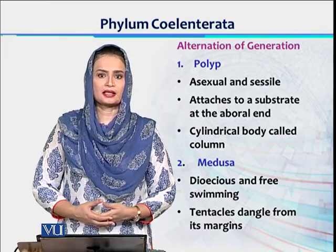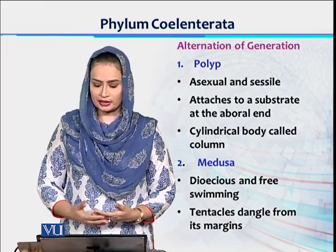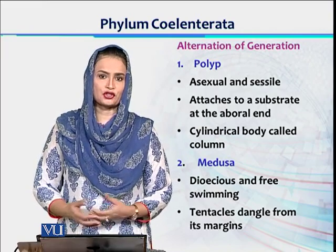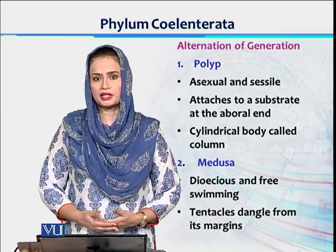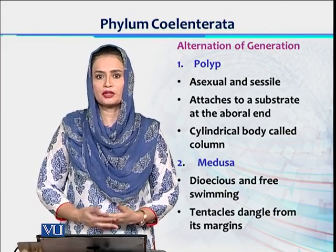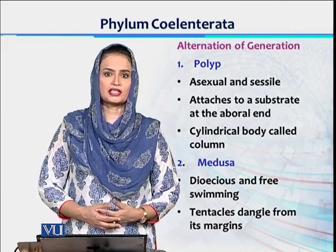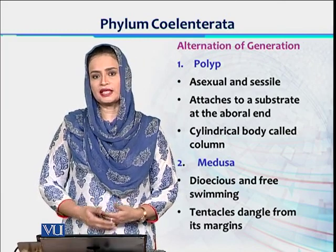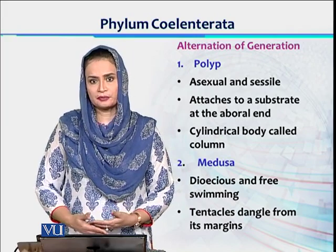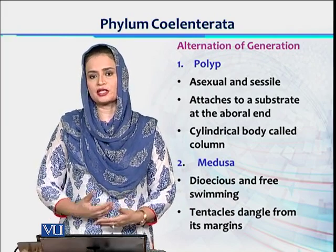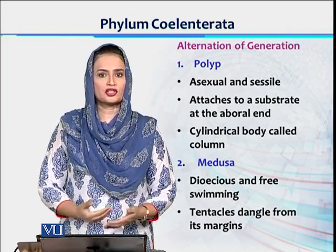An example of the polyp form is hydra, which reproduces asexually. The resulting form is called medusa, and the example of the medusa form is the jellyfish. These jellyfish then reproduce sexually, and this process continues — it is called alternation of generation.